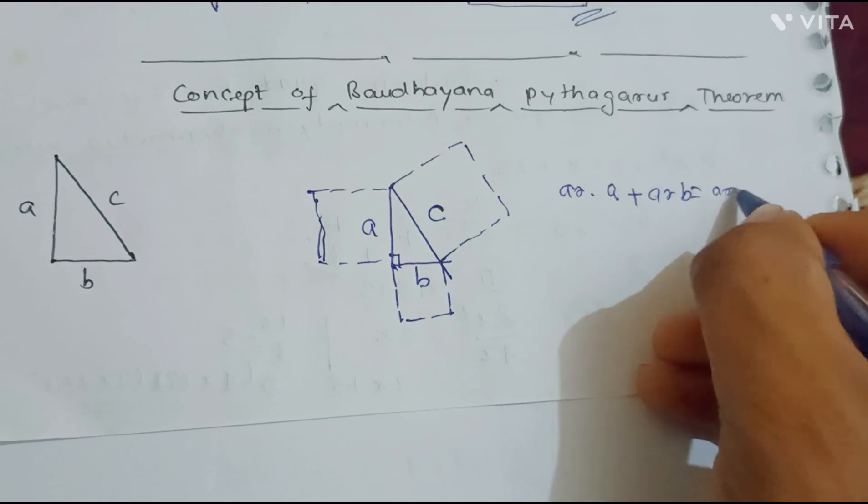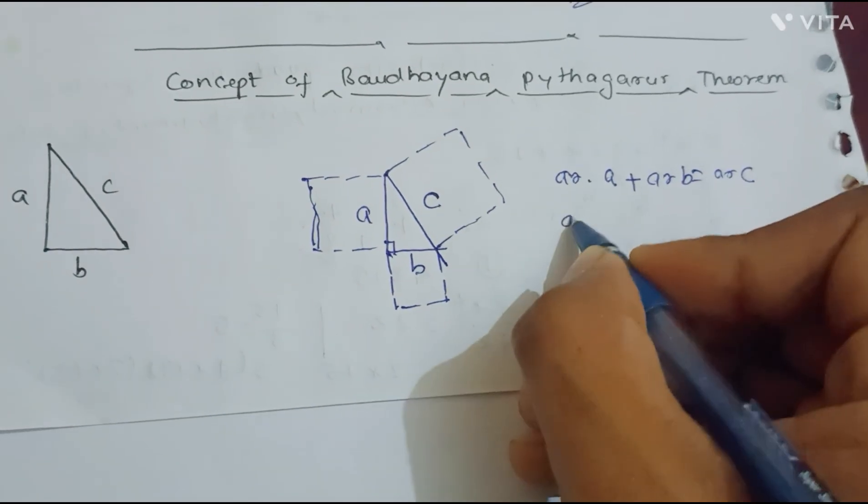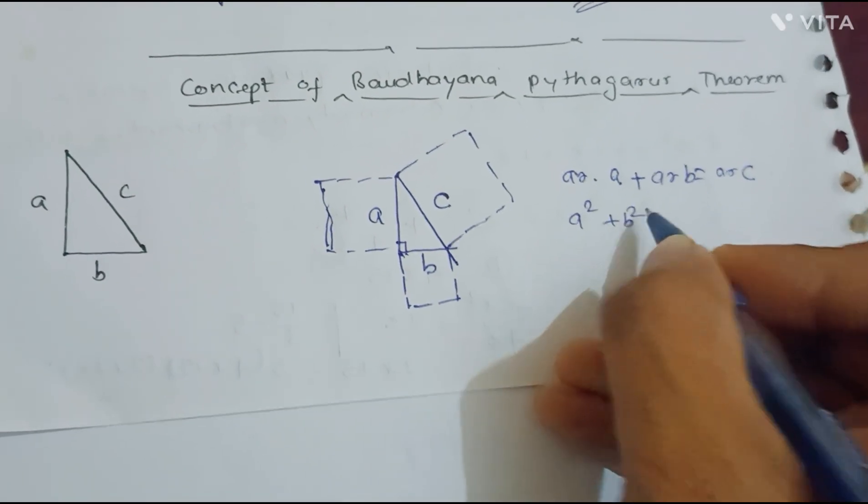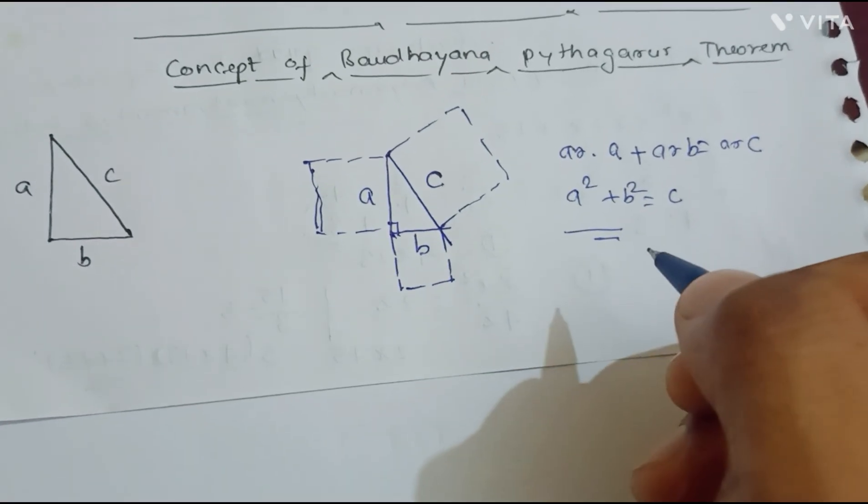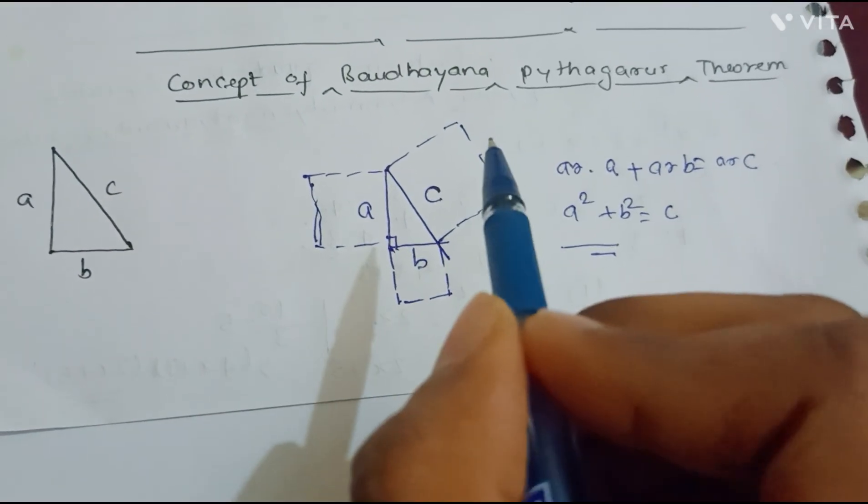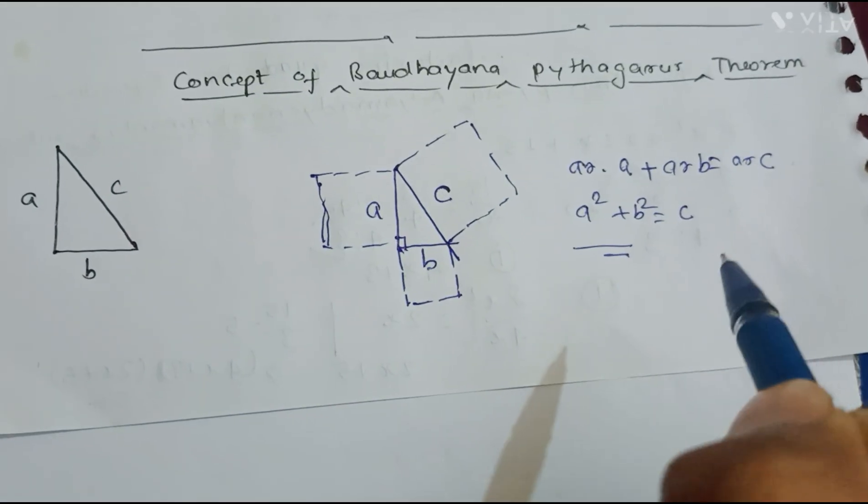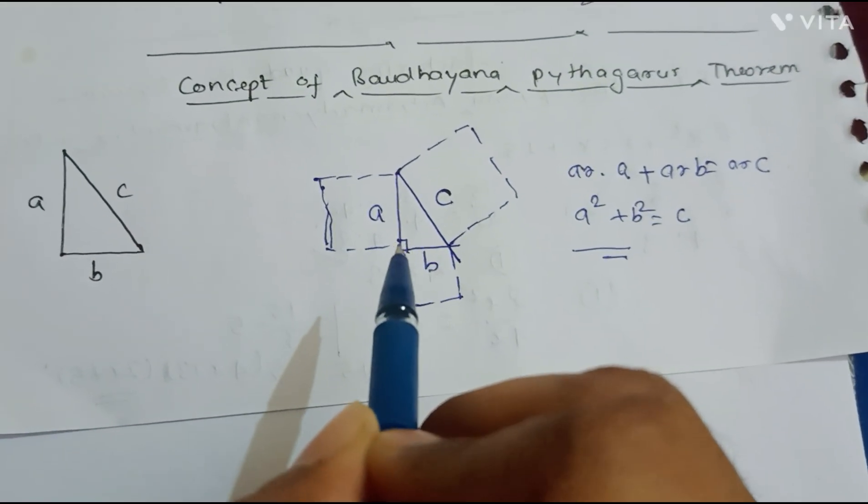This states that a squared plus b squared equals to c squared, and this is our Pythagoras theorem. So in the Baudhayana Shulva Sutra, it is mentioned through mantras that if we take a right angle triangle...